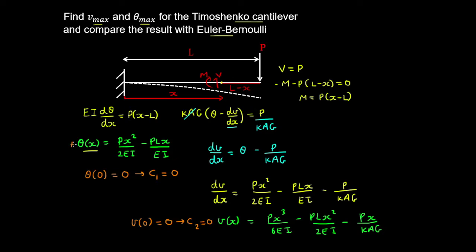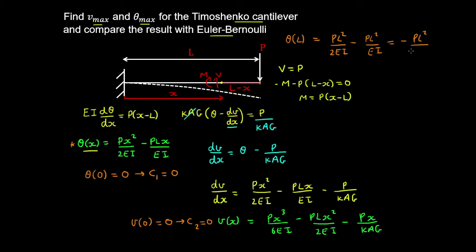To obtain the maximum rotation, we substitute x equals L. This gives theta at x equals L: PL² / 2EI minus PL² / EI, which simplifies to minus PL² / 2EI. This means the bending rotation at the tip of the cantilever is clockwise.